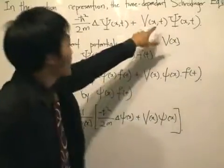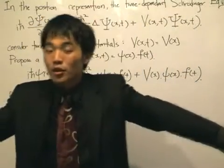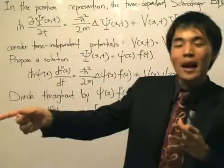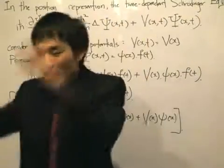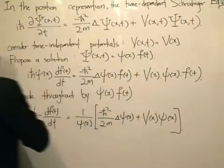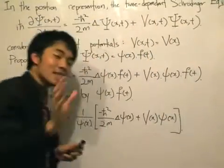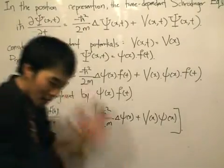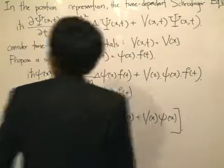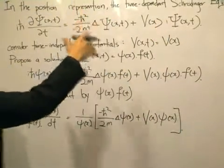The potential, which is also inside the Hamiltonian — remember, the Hamiltonian is the operator onto the wave function — can be time dependent or time independent. Our lesson from today and henceforth is going to look at time independent potentials. When we consider a time independent potential, V(x,t) becomes just V(x): the potential does not change in time. The particle is going to move, but the potential is not going to evolve with time.